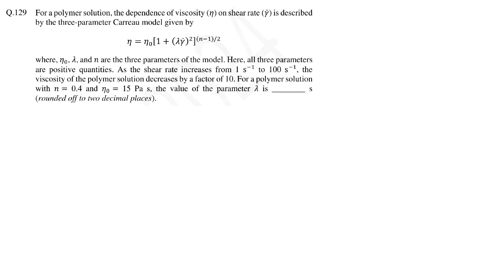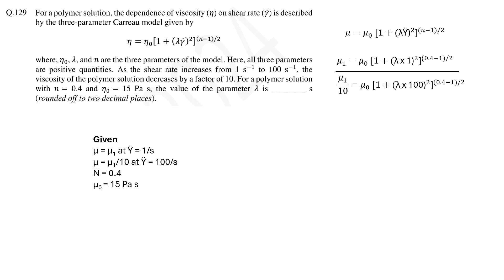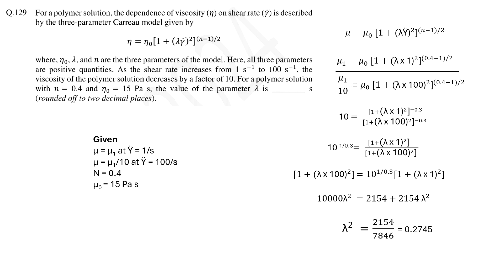Question 129 will test students' mathematical skill more than their knowledge of polymer science. Here viscosity of a polymer at different shear rates is given. Also, the relationship between viscosity and shear rate is given, which contains two constants N and lambda. The value of N is given and we need to calculate the value of lambda. By inserting the values of shear rate and viscosities in the equation we can find two equations. Taking the ratio of the two equations leads to an equation where the only unknown is lambda. After simplification we can find that the value of lambda is 0.52.